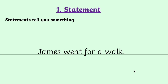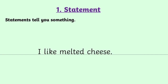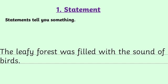Let's look at some examples. 'James went for a walk.' This is a statement — it tells us something. We can easily see this sentence is about James, and what James was doing was going for a walk. 'I like melted cheese.' Again, this tells us something — it tells us what I like. Here's a longer example: 'The leafy forest was filled with the sound of birds.' This sentence is about the leafy forest, and we find out that it was filled with the sound of birds. So the first type of sentence is statements — they tell you something.